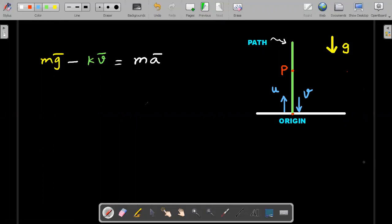So mg bar is the weight vector and minus kv bar. I'm not saying minus kv bar is downward or upward. This minus represents that it is actually opposite the velocity vector. Its proportionality constant k is not given, so I expect this to be eliminated in the final step of the answer.